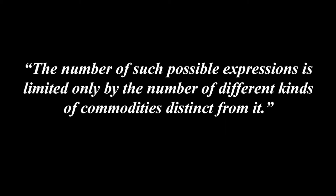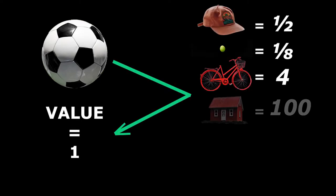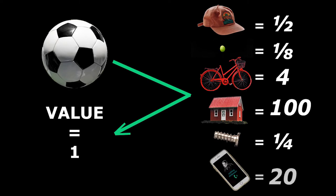The number of such possible expressions is limited only by the number of different kinds of commodities distinct from it. In the next two sections, Marx examines the relationship of a commodity not just against one other commodity but against all commodities — so our football is now joined by everything else. For example, we can imagine its expression of worth and value in relation to our hat, our pea, a bike, a house, a screw, a phone, and an endless amount of others that are continually growing and expanding as we produce more.